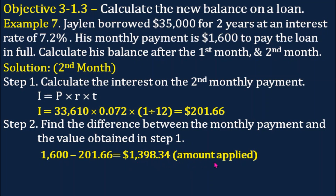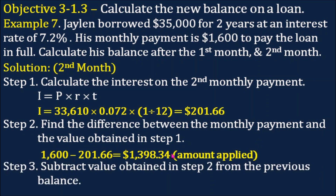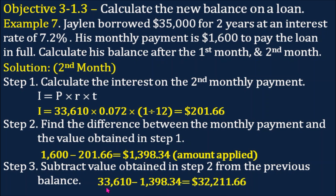Step 3: subtract the amount applied in step 2 from the previous balance. $33,610 minus $1,398.34 equals $32,211.66. So this is the balance after the second month.